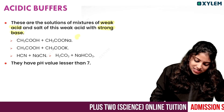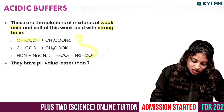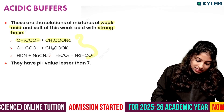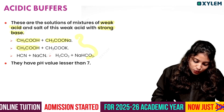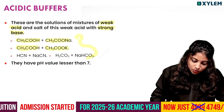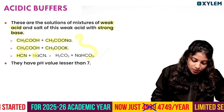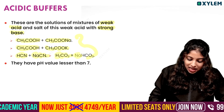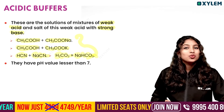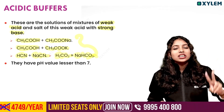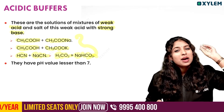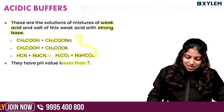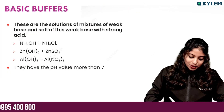The examples are very important. CH3COOH / CH3COONa, CH3COOH / CH3COOK, then HCN / NaCN, then H2CO3 / NaHCO3. These are examples of Acidic Buffers. Acidic Buffers have a pH less than 7.